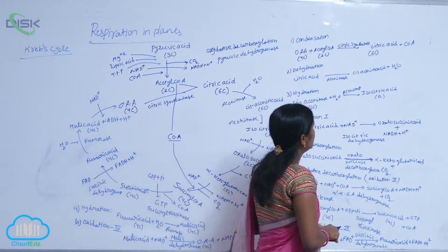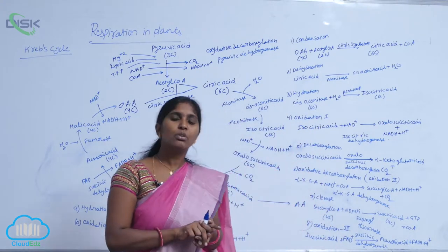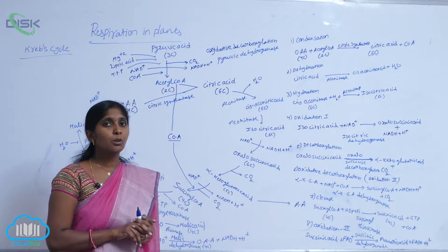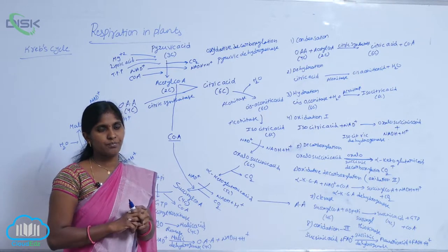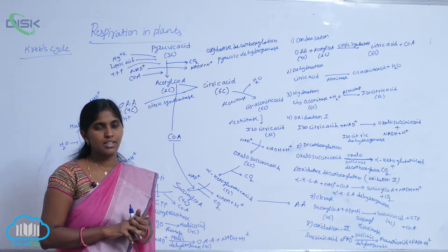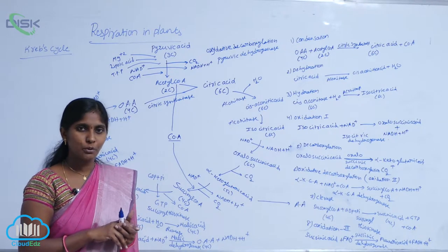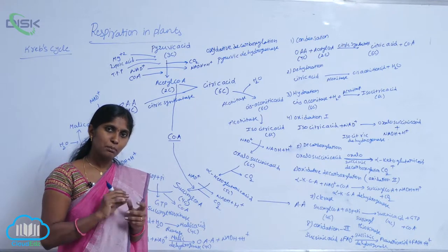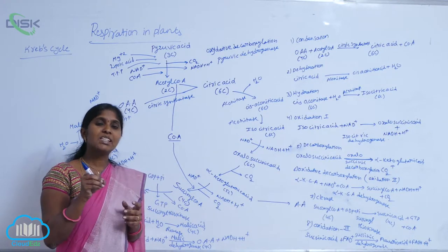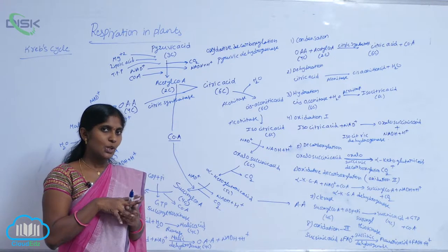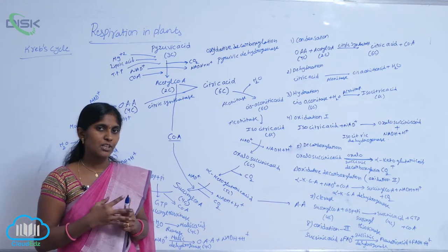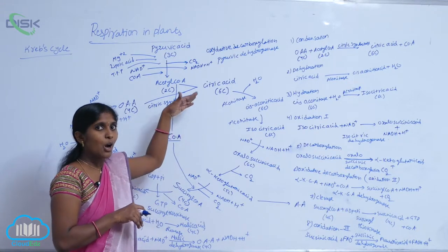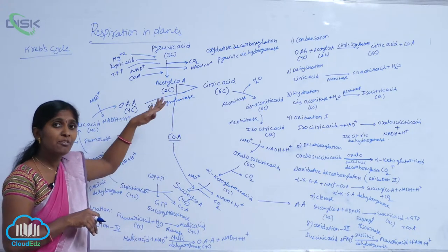When one molecule of glucose is involved in oxidation, how many carbon dioxide molecules are released? In the basic reaction of aerobic respiration, glucose when completely oxidized results in 6 carbon dioxide molecules. This means when glucose molecules are involved in the Krebs' cycle, two Krebs' cycles are carried out. So, during one Krebs' cycle, how many carbon dioxide molecules are released and where are they released?